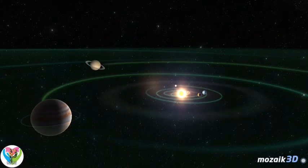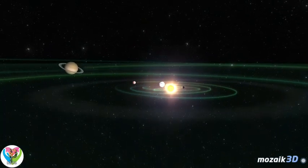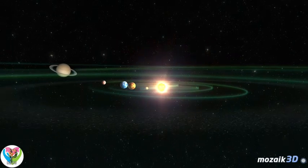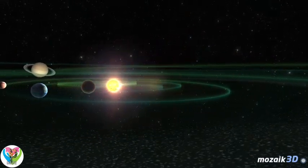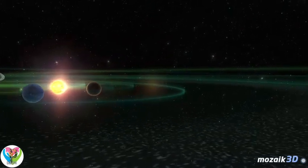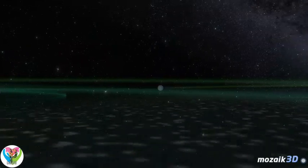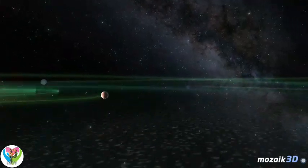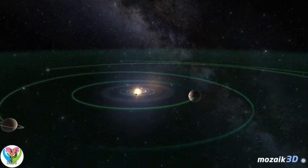Besides planets, there are billions of small objects in the solar system. Asteroids can be found just about everywhere. Many of them have orbits that cross that of the Earth. Most of the asteroids are located in two zones. The inner asteroid belt is between Mars and Jupiter, where there are at least one billion asteroids larger than one kilometer in diameter.